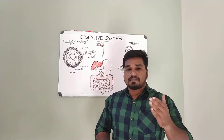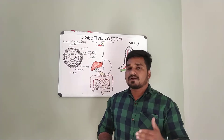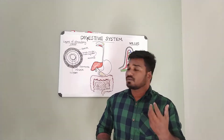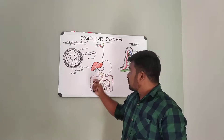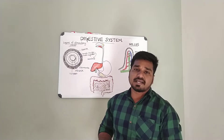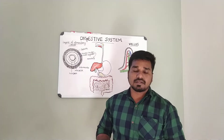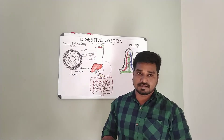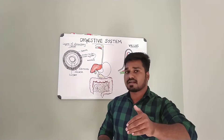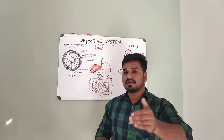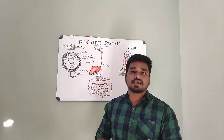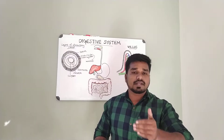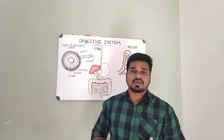The fat is digested by pancreatic juice. The liver is another major accessory organ involved in digestion and body metabolism. Together these accessory organs — salivary glands, pancreas, and liver — support the digestive process.